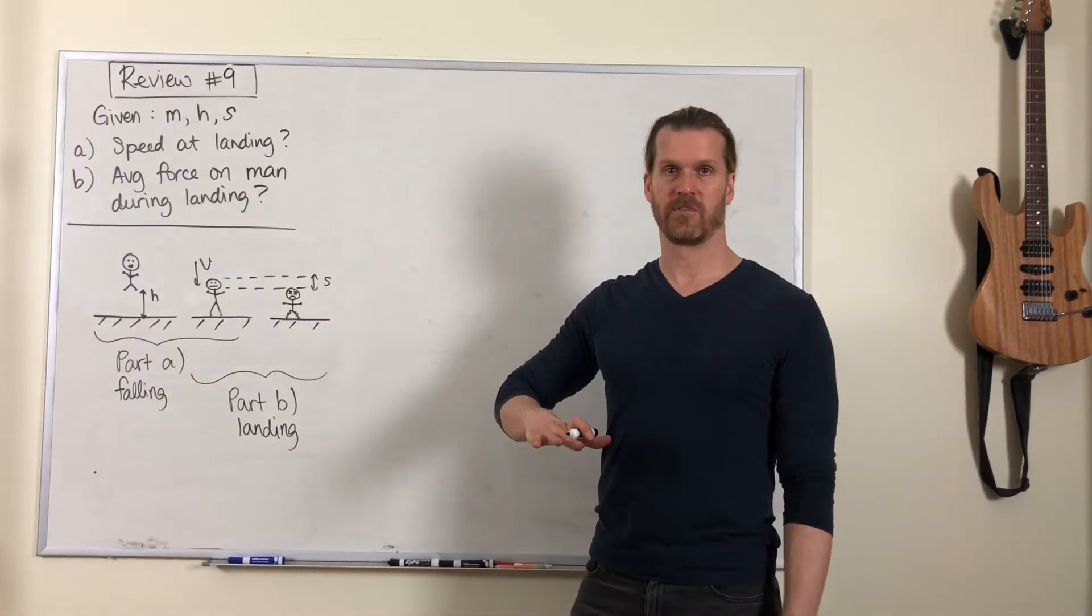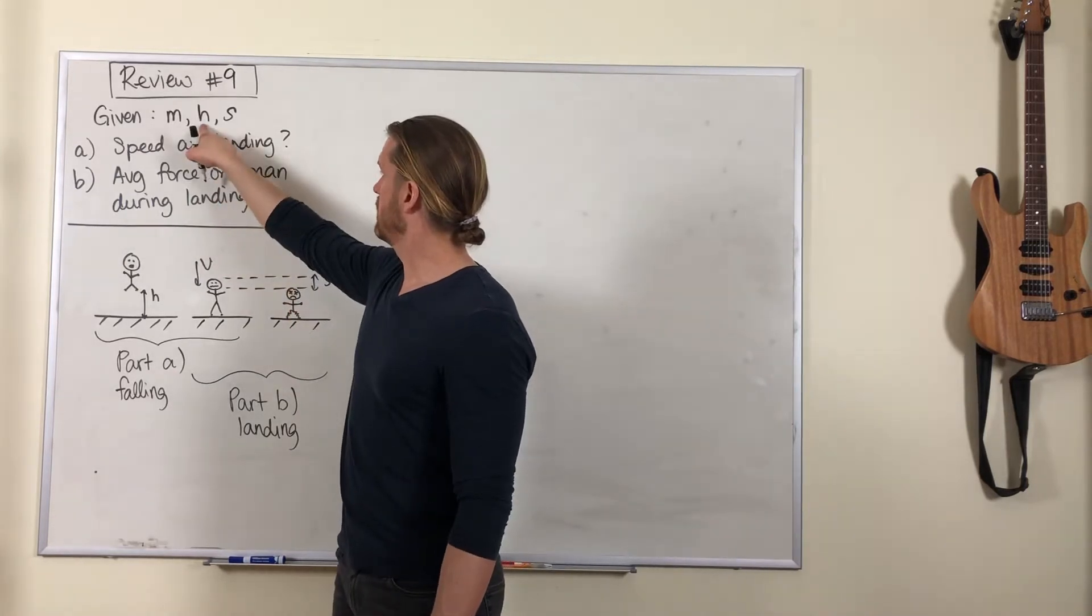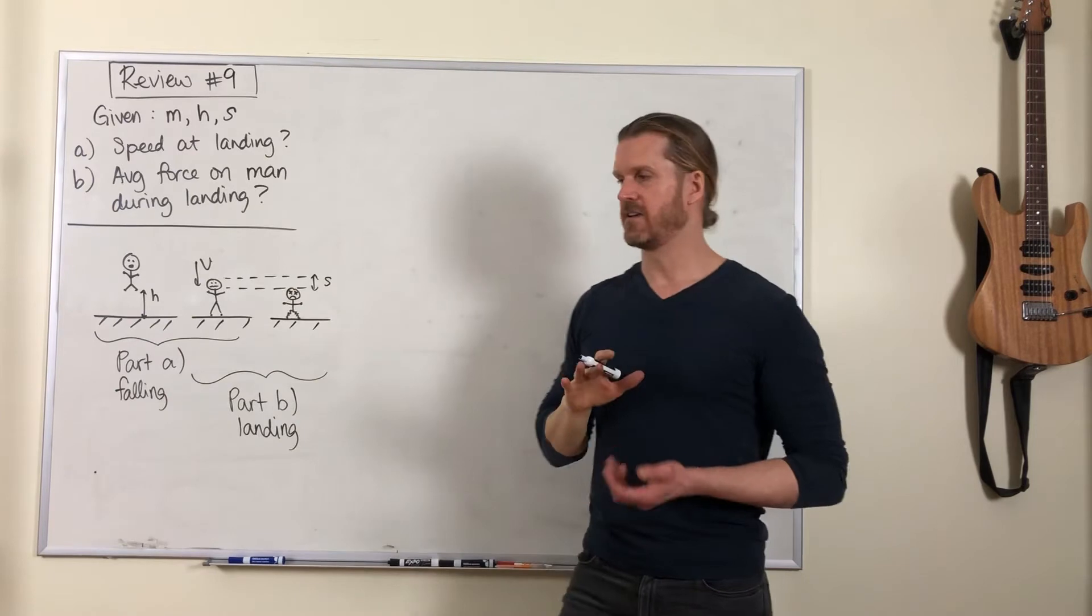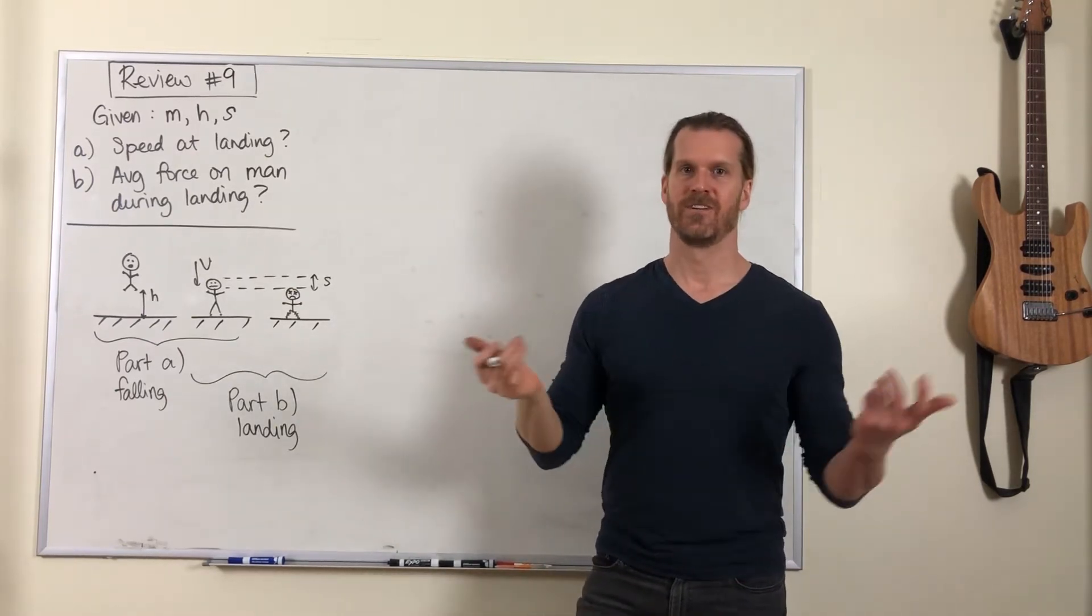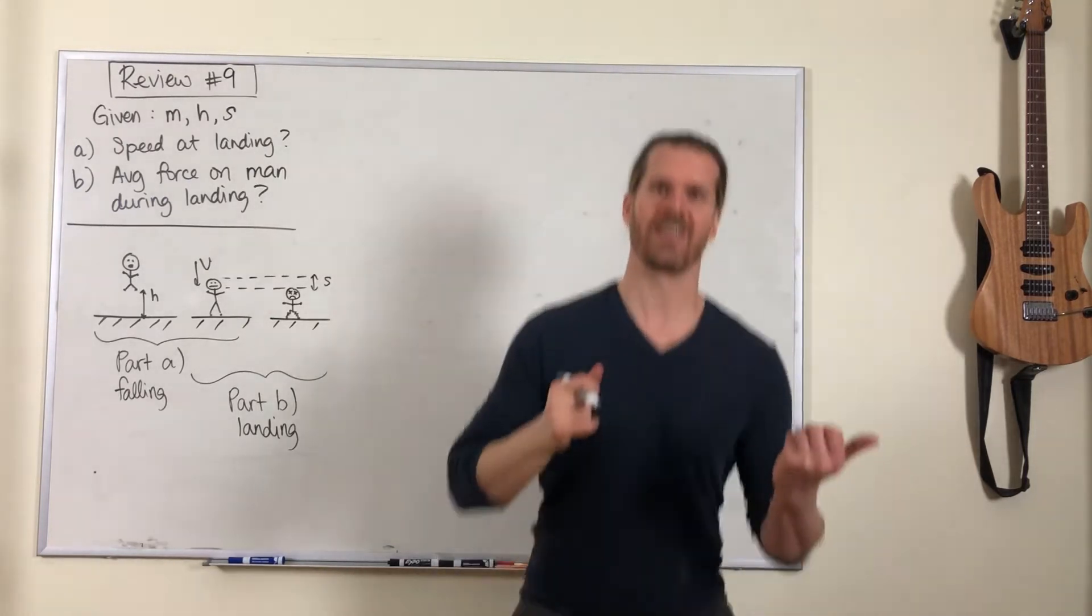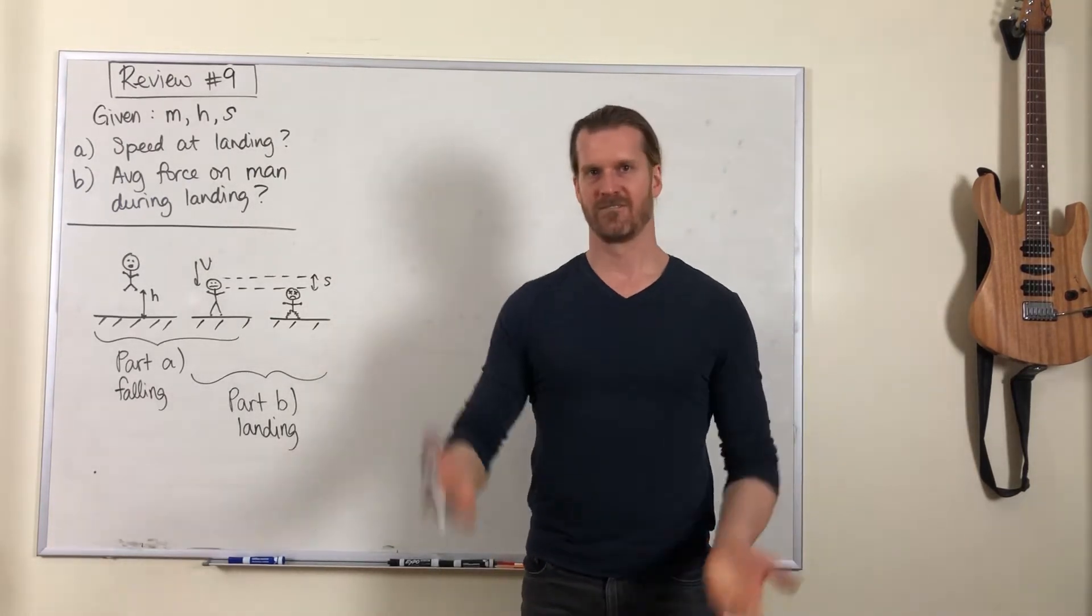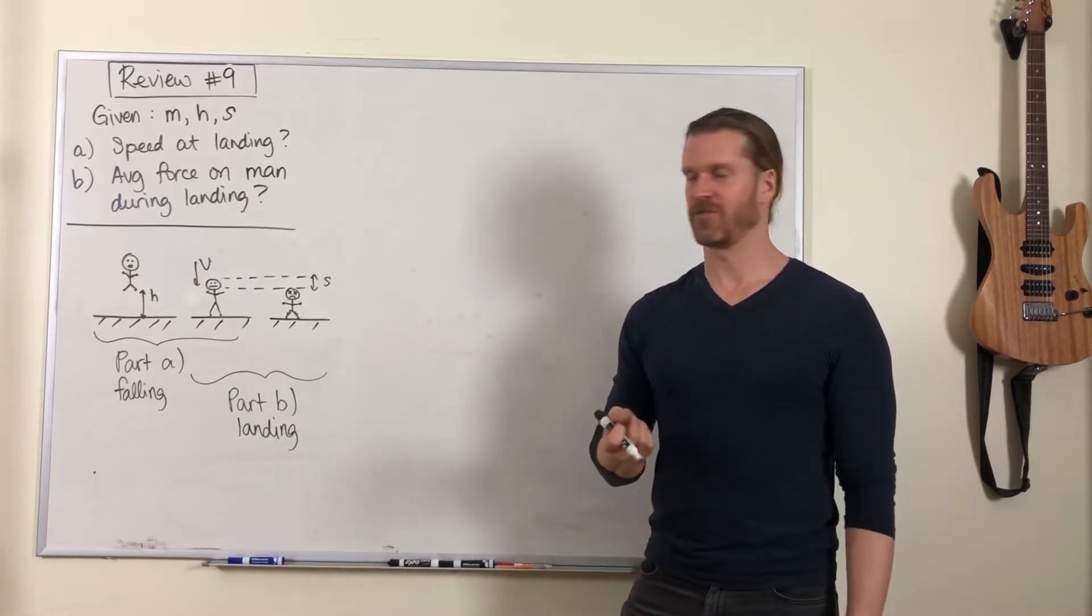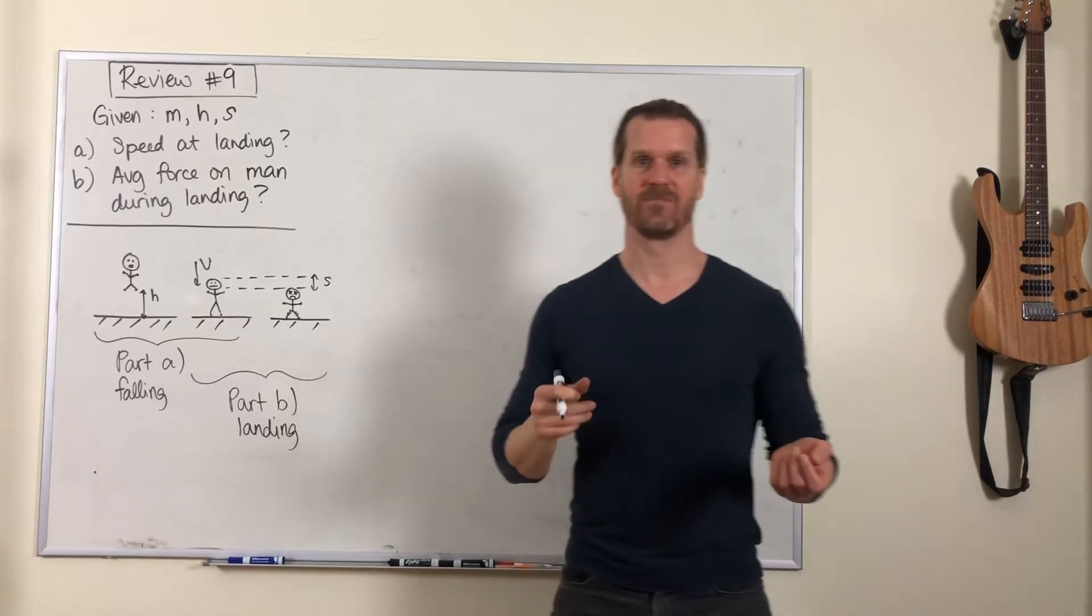This number s is the amount of give he has in the landing. Normally if you jump and land, you allow your knees to bend so that you can move down a little bit. If you jump off a high surface, you probably have a pretty large value for s.